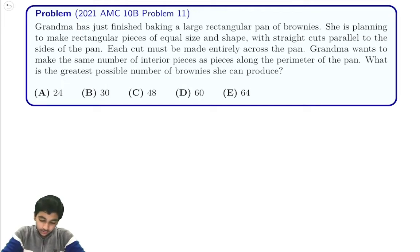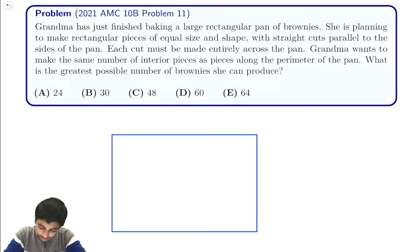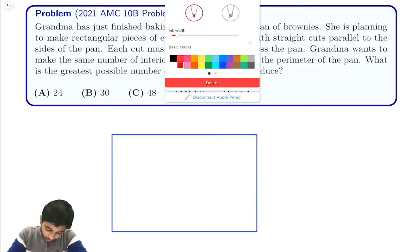Today we're going to take a look at the 2021 AMC 10B, problem 11. Grandma has just finished baking a large rectangular pan of brownies. She's planning to make rectangular pieces of equal size, like this.